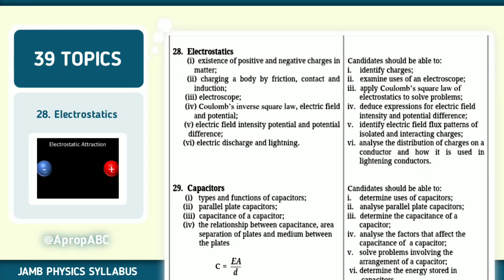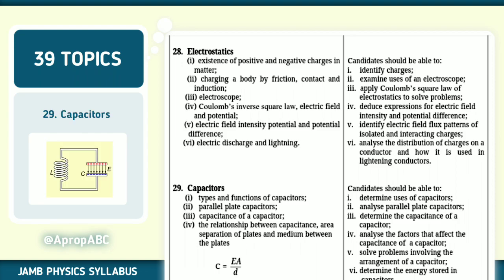Number 28 of 39, we have electrostatics. You have to understand the existence of positive and negative charges. Like charges attract, like charges repel. All of these things are some of the things that you have to know. Identify charges, examine use of electroscope, apply Coulomb's square law of electrostatics to solve problems. Analyze the electrostatic discharge, distribution of charges on conductors and its use in lightning conductors. Note that very well. Check some videos on them.